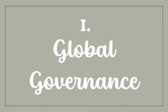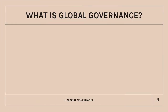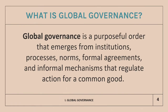Let's get right into the first part, which explains more about global governance. For us to understand this topic overall, let us first define what global governance is. Global governance is a purposeful order that emerges from institutions, processes, norms, formal agreements, and informal mechanisms that regulate action for a common good. It is a means to manage issues that cut across national borders, whether it is a pandemic, a financial crisis, climate change, or a geo-economic dispute. The goal of global governance, roughly defined, is to provide global public goods, particularly peace and security, justice and mediation systems for conflict, functioning markets, and unified standards for trade and industry.